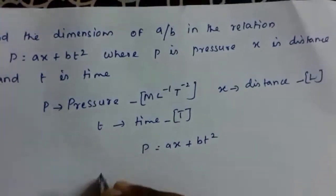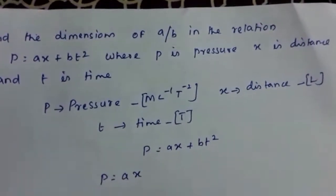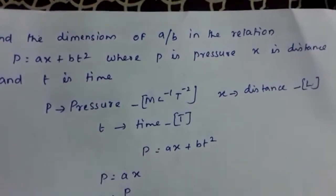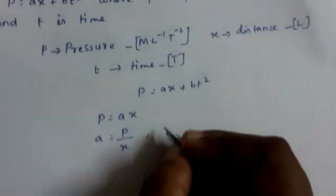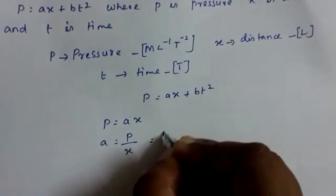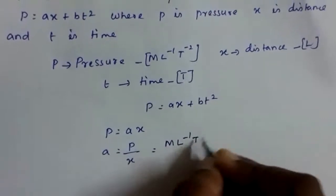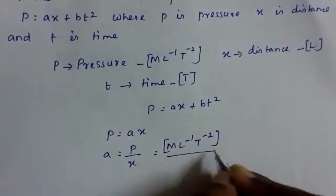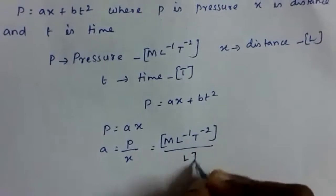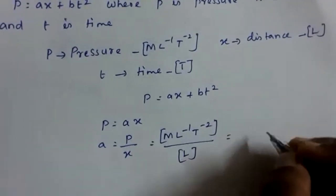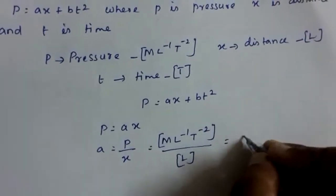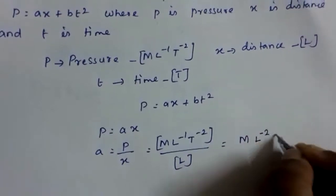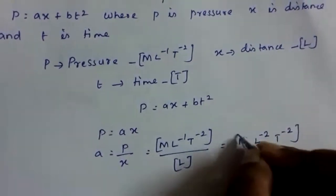Setting p equal to ax, we get a is equal to p by x. Writing the dimensions: M L raised to minus 1 T raised to minus 2 divided by L. Taking the denominator to the numerator, the dimension of a is M L raised to minus 2 T raised to minus 2.